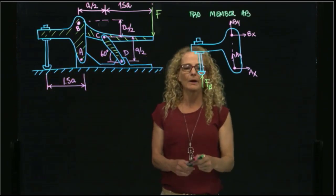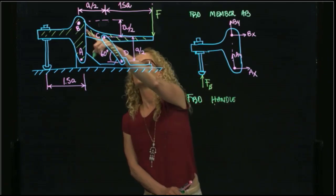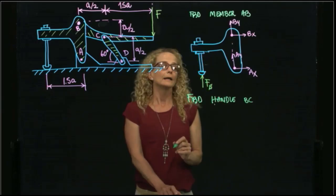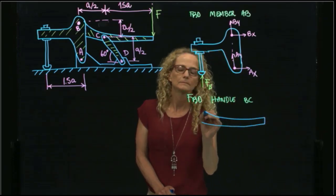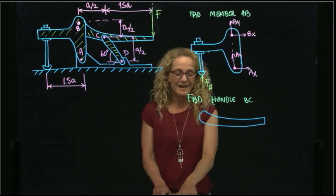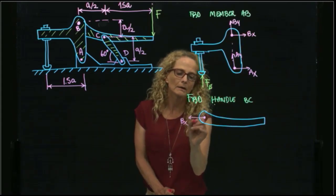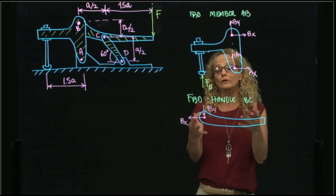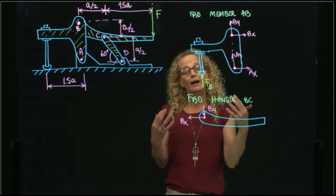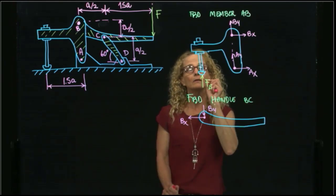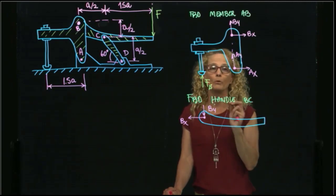Then we have two reaction forces because of this pin that we can call BX and BY, and pin A that also has two forces, AX and AY. Then I have the free body diagram of the handle, which I can call BC. At point B we receive exactly the same forces but in an opposite direction.